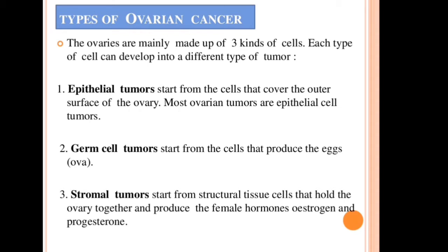The second type is germ cell tumors, which start from the cells that produce the ova. When the ovaries have abnormal cell growth in those cells, that is called a germ cell tumor. The third type is stromal tumors, which start from the structural tissue cells that hold the ovary together and produce the female hormones estrogen and progesterone.